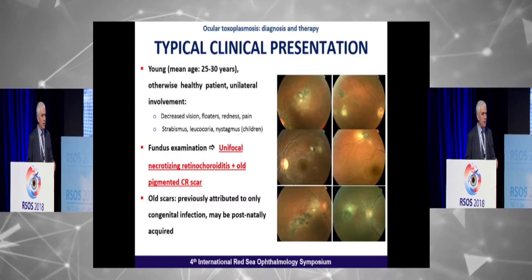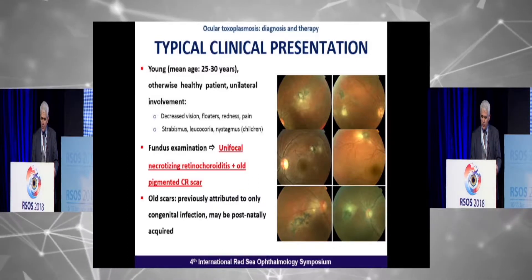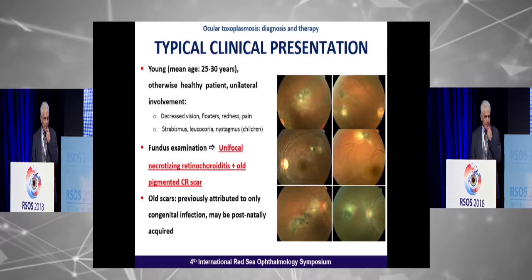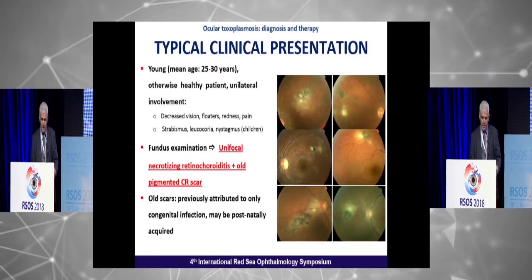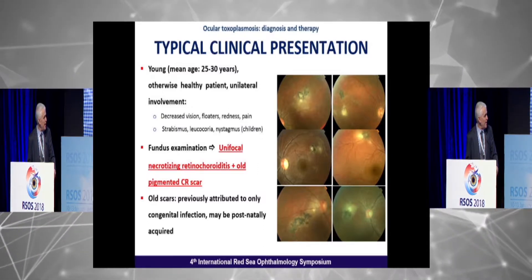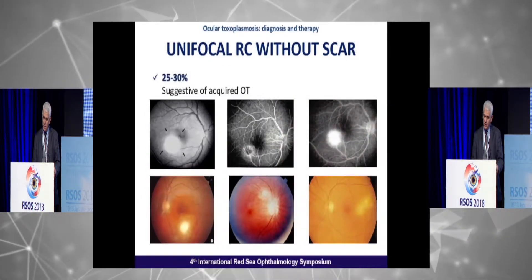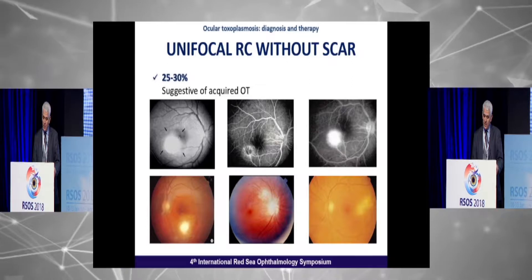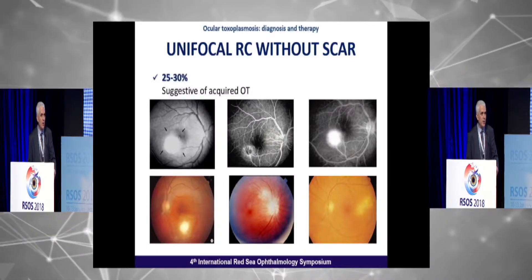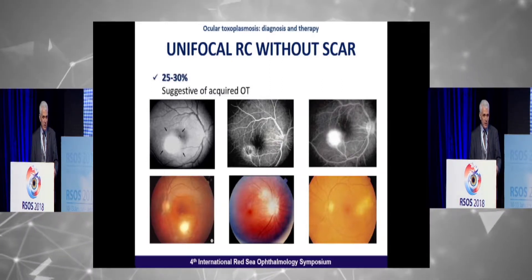Fundus examination typically shows unifocal necrotizing retinochoroiditis associated with an old pigmented scar adjacent to active lesions or in the contralateral eye. Old scars were previously attributed to congenital infections; however, they may be postnatally acquired. In patients with unifocal retinochoroiditis without a chorioretinal scar — 25 to 30% of cases — this presentation without old scars may suggest acquired ocular Toxoplasmosis.